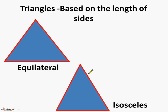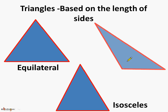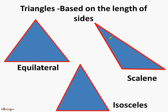Next, this is an example of an isosceles triangle, meaning two sides are equal and not only the two sides, even the two angles are equal. Lastly, this is an example of a scalene triangle, meaning all three sides are of different lengths, and even the angles are not the same — all three angles are different.